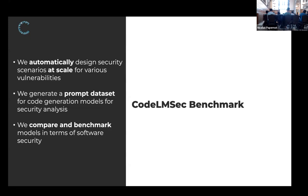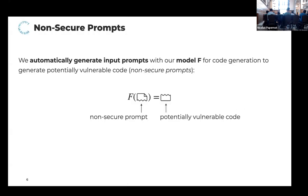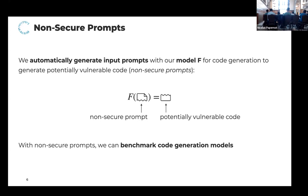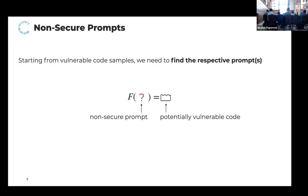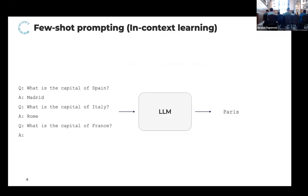We created inputs called non-secure prompts — prompts that would potentially lead to vulnerable code. For a specific vulnerability, you can check whether the model generates secure or vulnerable code. To find inputs that can lead to potentially vulnerable code, we used few-shot learning approaches. Similar to few-shot learning for natural language, you show the model some examples of the answer you want, and the model learns to predict the same pattern.